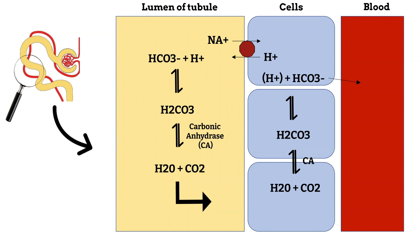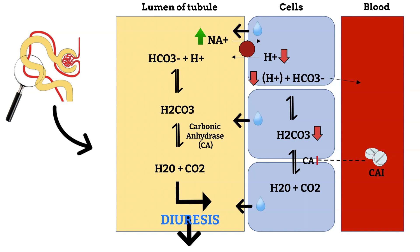When we give a carbonic anhydrase inhibitor, they inhibit the enzyme carbonic anhydrase. This inhibition leads to a decrease in carbonic acid formation, meaning there will be a decrease in the formation of hydrogen ions and bicarbonate. If there is a decrease in hydrogen ions, there will be fewer hydrogen ions available to exchange with sodium from the lumen of the tubule into the cells. This leads to a buildup of sodium in the lumen of the tubule, and as we know, water follows sodium — so we get the diuresis effect.